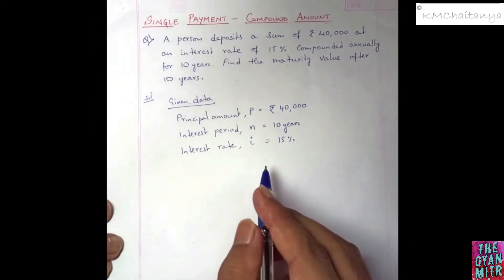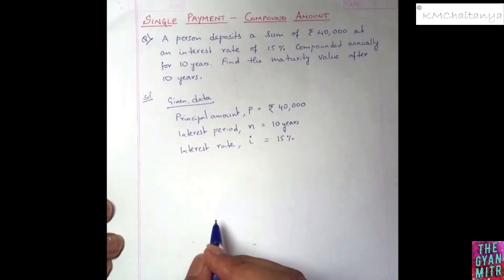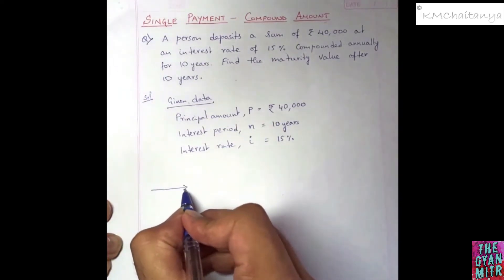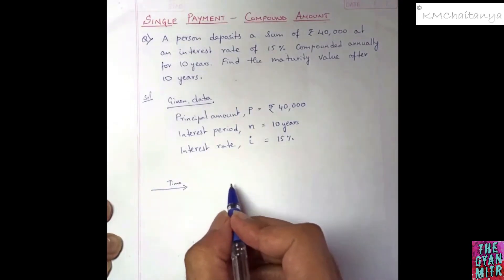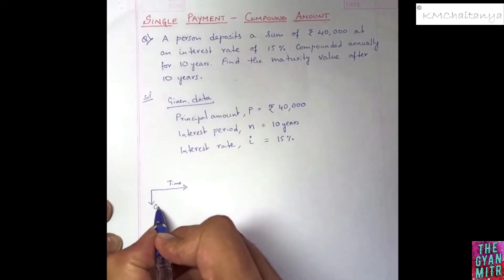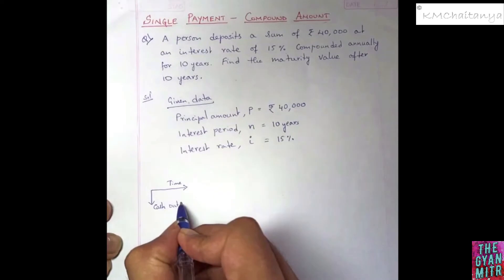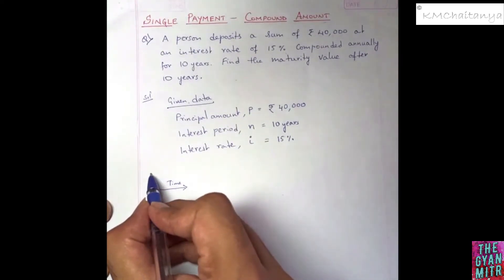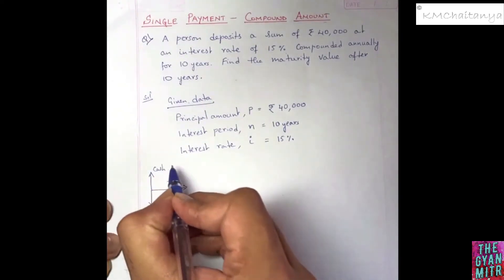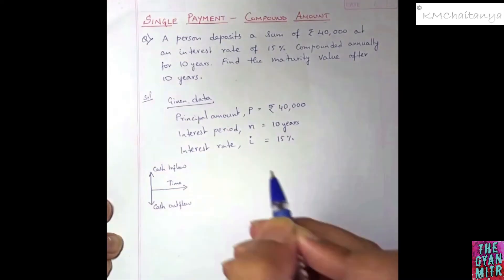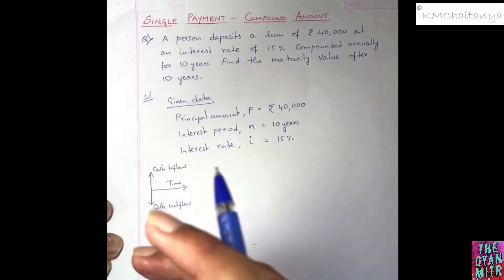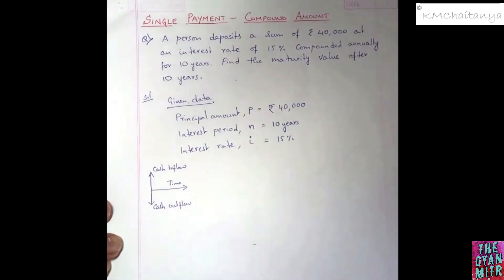For these types of problems you are supposed to draw a cash flow diagram. The cash flow diagram consists of a horizontal timeline. Vertical arrows represent cash flows — if the arrow is vertically downwards it is a cash outflow, and if the arrow is vertically upwards it represents cash inflow, meaning money coming into your account.